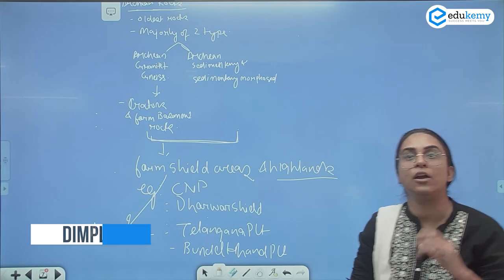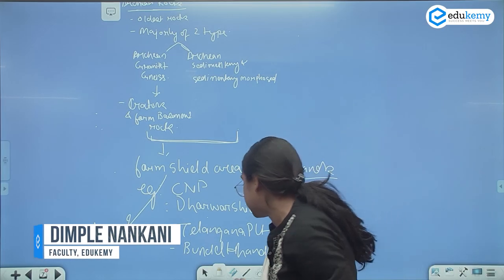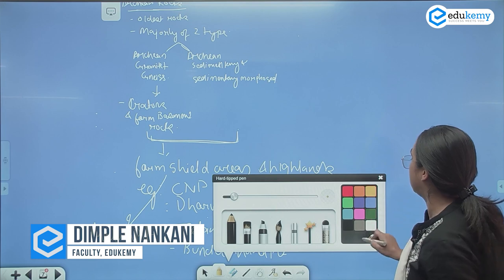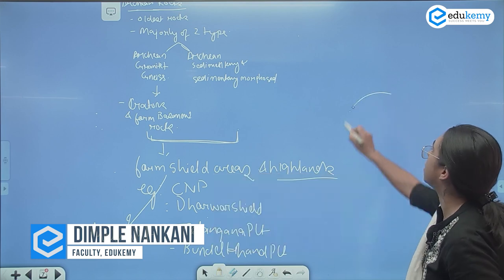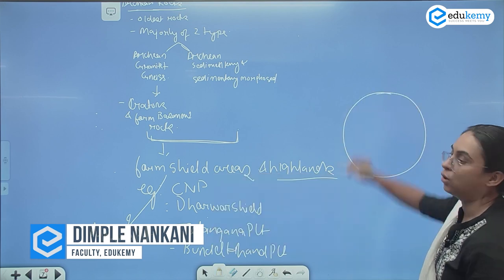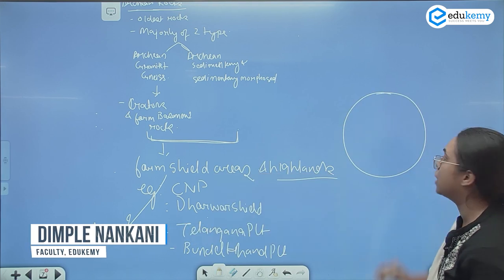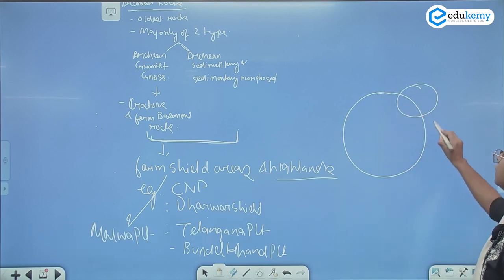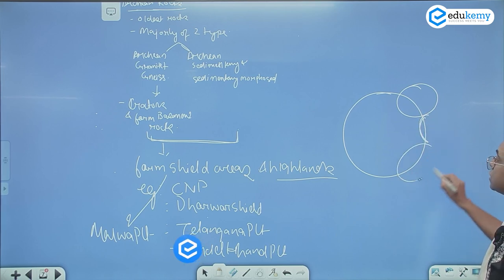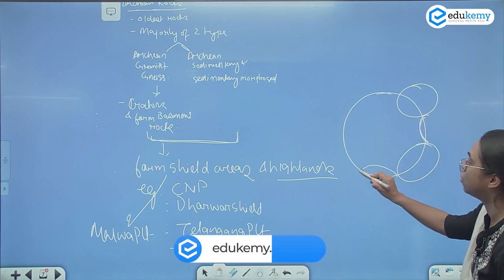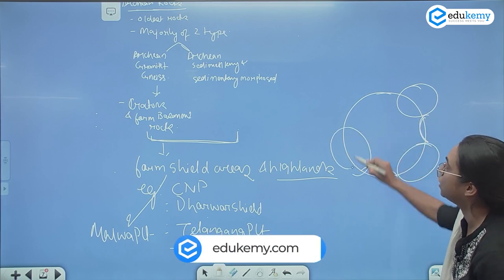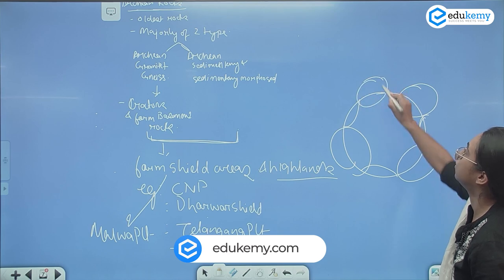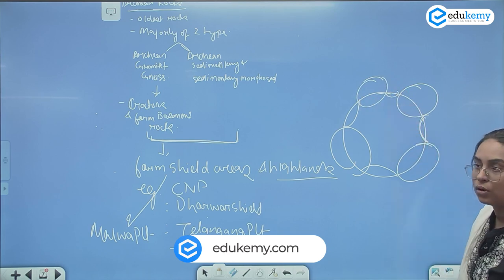Now, all of you understand one thing. If this is your earth, okay — earth has continents and earth has oceans. Continent, oceans, continent, oceans — they alternate.